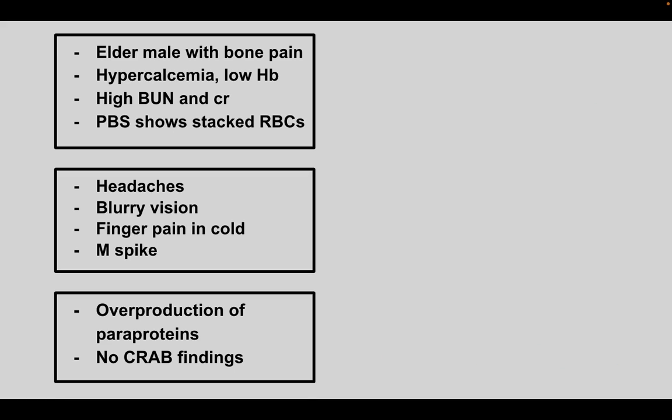Next is an elderly male with bone pain, hypercalcemia, low hemoglobin, high BUN and creatinine, and a peripheral blood smear showing stacked red blood cells (rouleaux formation). This is multiple myeloma. Watch out for the IgG spike on immunoglobulin electrophoresis.